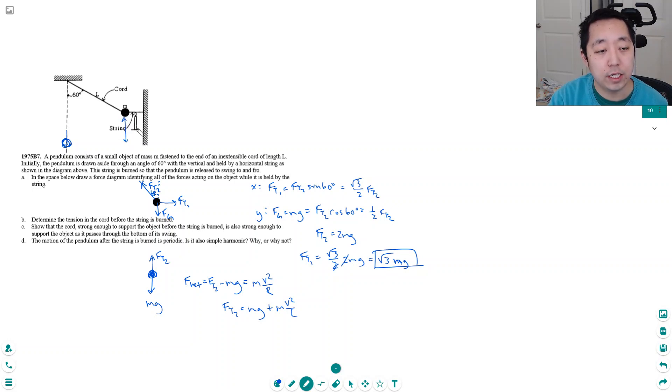To find the velocity down here, I can do this setup: mgh equals one half m v squared. All the potential energy is converted to kinetic energy, so v squared equals 2gh. But I need to know what this height h is. That's not given to me, but if this is l and this is 60 degrees, I can draw this shape.